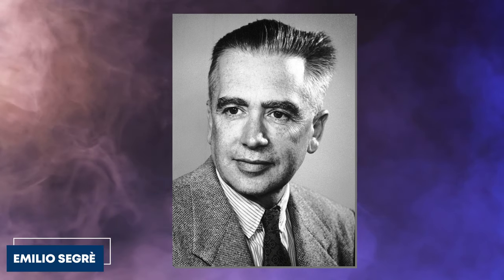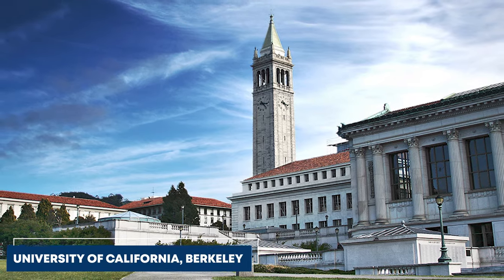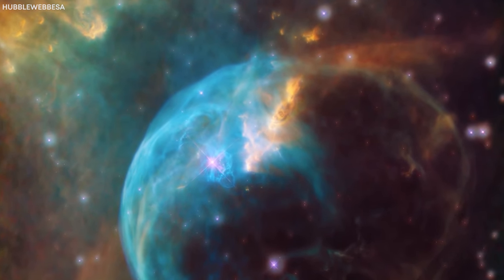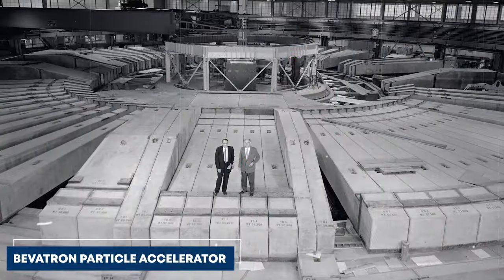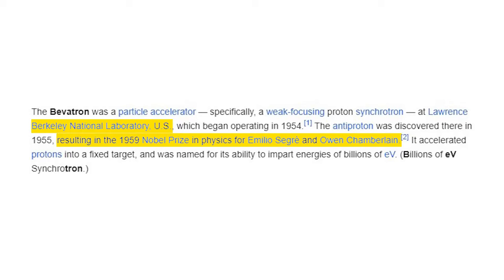In 1955, Emilio Segre and Owen Chamberlain at the University of California Berkeley successfully detected the antiproton, the proton's antiparticle, using the bevatron particle accelerator. This discovery earned them the Nobel Prize in physics in 1959.